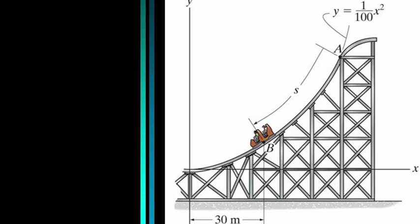Here's another application. A roller coaster travels down a hill for which the path can be approximated by a function y. The roller coaster starts from rest and increases its speed at a constant rate. How can we determine its velocity and acceleration at the bottom? If I'm designing this roller coaster, I would certainly want to know the accelerations involved so I could design the system so that the car doesn't leave the track.